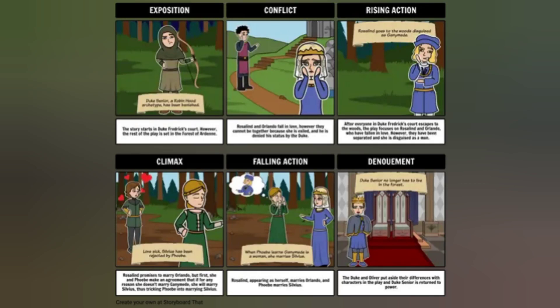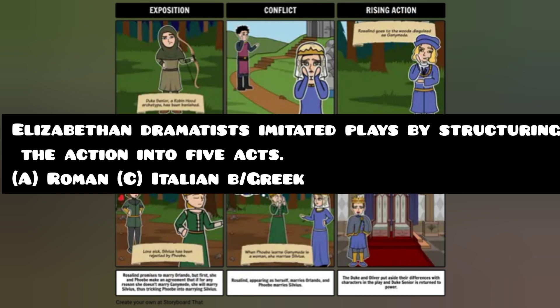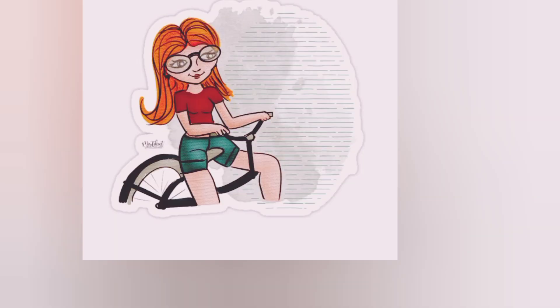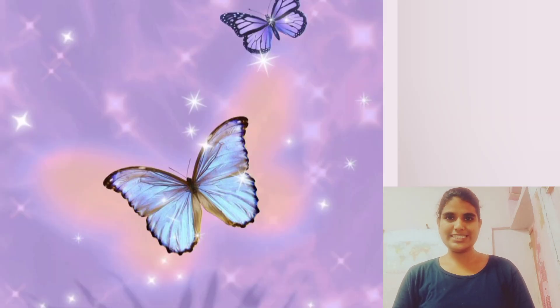Shakespeare's plays are performed in five acts: exploring, conflict, rising action, climax, falling action, and denouement. These are the five acts in Shakespeare's plays. The question is asked like this: Elizabethan dramatists imitate the play by structuring the action into five acts. Roman plays are also in five acts.